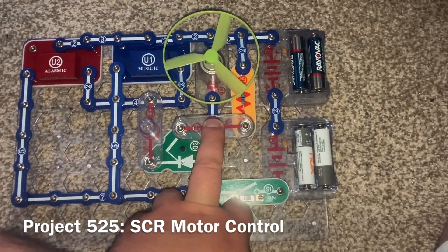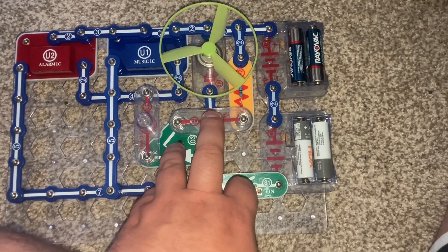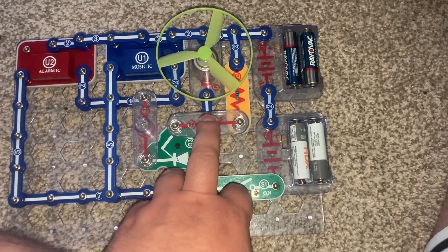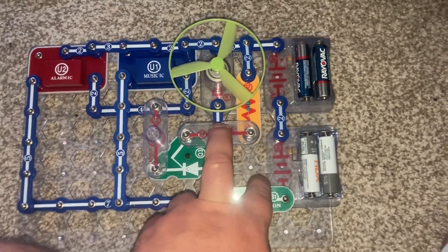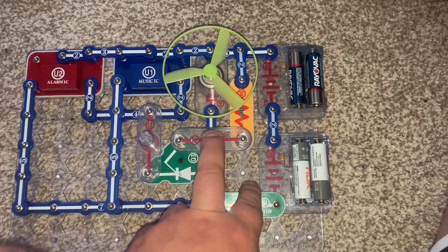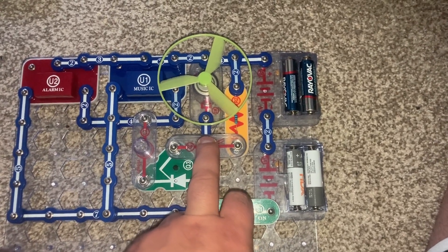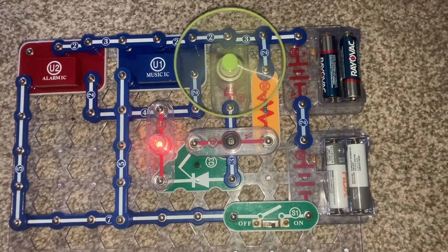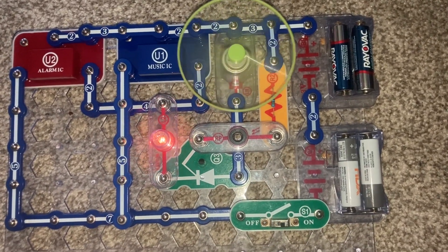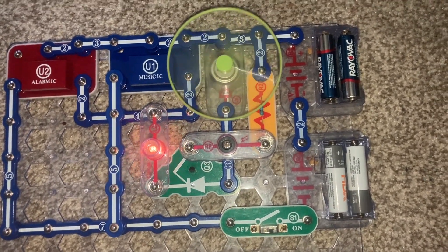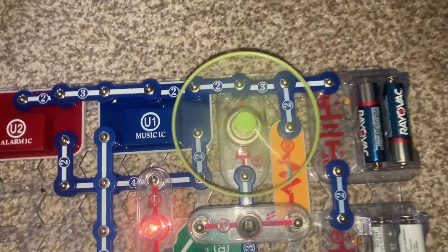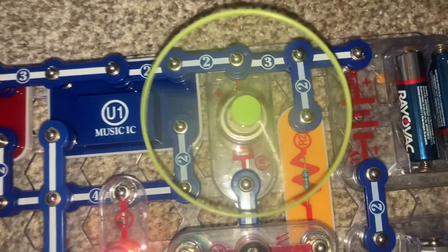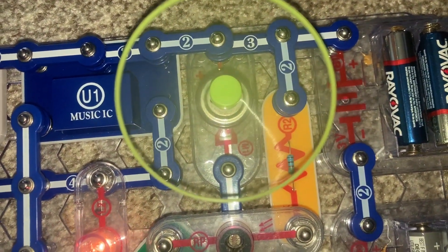This project uses the Q3 diode or SCR to control the motor and lamp. When I remove my finger from the photoresistor, the motor and fan spin and the lamp comes on.